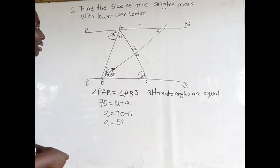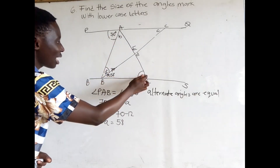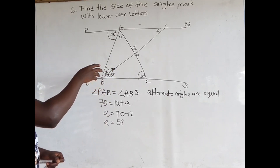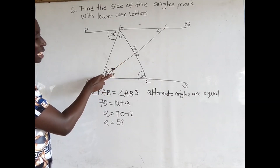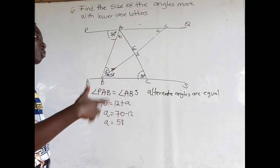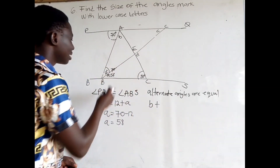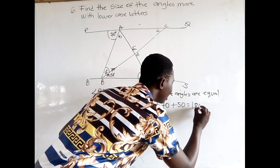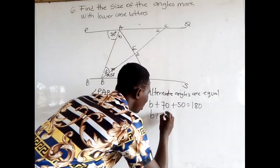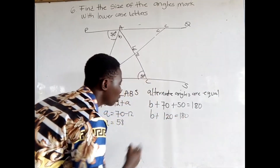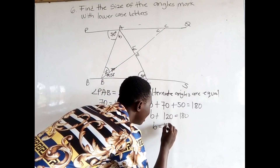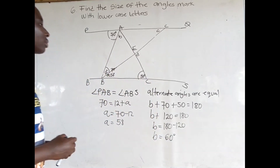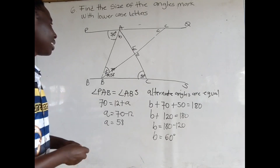Moving on to b: looking at where b is, we can see it is in a triangle. We know two sides of the triangle, so we use the property of a triangle which states that the sum of the interior angles sums up to 180. We get b plus 70 plus 50 is equal to 180. 70 plus 50 is 120, so b plus 120 is equal to 180. Making b the subject: b is equal to 180 minus 120, so b is equal to 60 degrees.